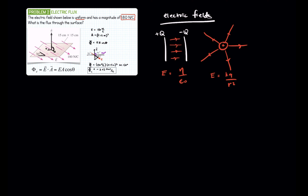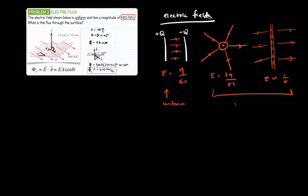We also have a line of charge. If we have a line of charge, the electric field points out, and it looks more like a bottle brush — it comes out of the page and goes into the page. We also have the infinite plane, which looks a lot like the capacitor. For the line of charge, the field drops off as 1 over r. So the capacitor is uniform, while the point charge, line charge fields are not uniform.